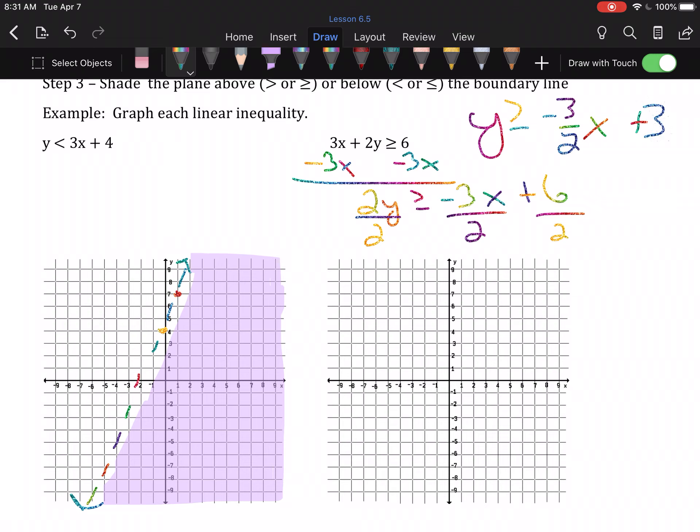Now that I've got slope-intercept form, I can graph. So, step 1: plot the y-intercept, which is positive 3. From there, count off the slope, which is down 3, right 2. Those lines are connected with a solid line, because this inequality has the or equal to on it. So again, you do need to go edge to edge of the grid.